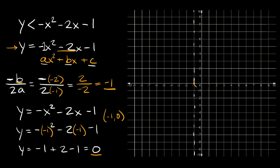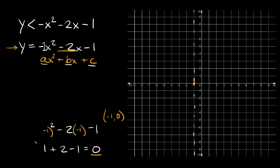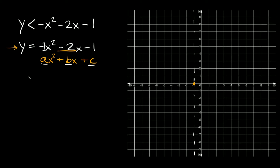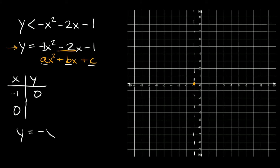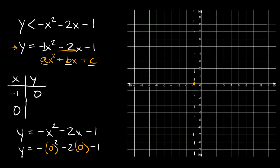Now in order to graph our parabola, we just need one more point. The easiest way is to make a little xy table. We know one point — the vertex at negative 1 comma 0 — so let's find one more by plugging in x equals 0. The equation is y equals negative x squared minus 2x minus 1, so y equals negative (0) squared minus 2 times 0 minus 1. Zero squared is 0, and negative 2 times 0 is 0, so we're just left with minus 1. So y equals negative 1, giving us the ordered pair 0 comma negative 1.